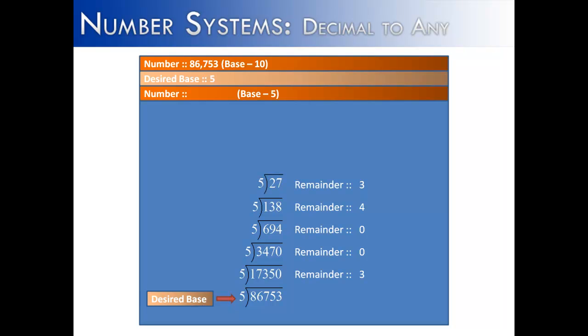Divided again by 5, we get 27 with a remainder of 3. Divided again by 5, we get 5 remainder 2. Divide 5 by 5, we get 1 remainder 0.